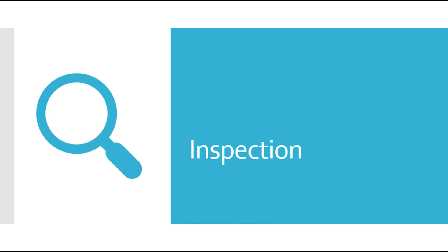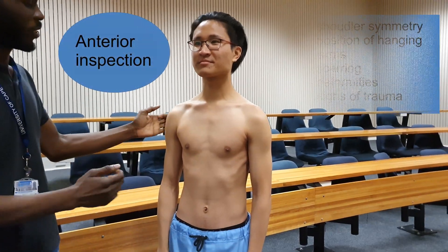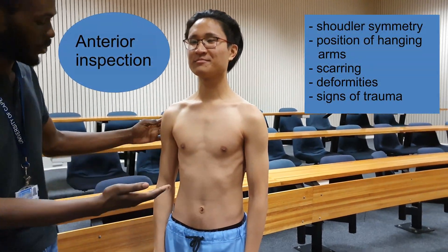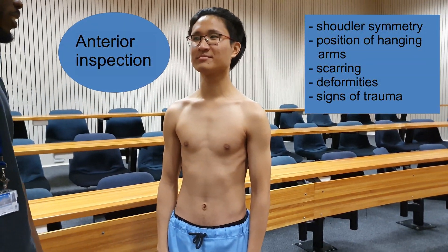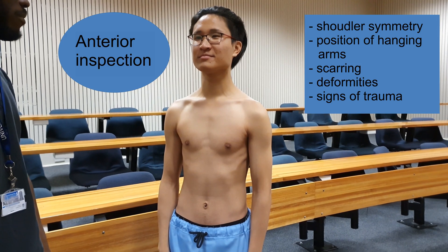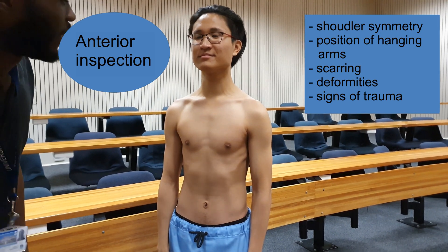We'll start with inspection. Anteriorly you'll look for symmetry of the shoulder height and hanging arm position, scarring, deformities, and signs of trauma.